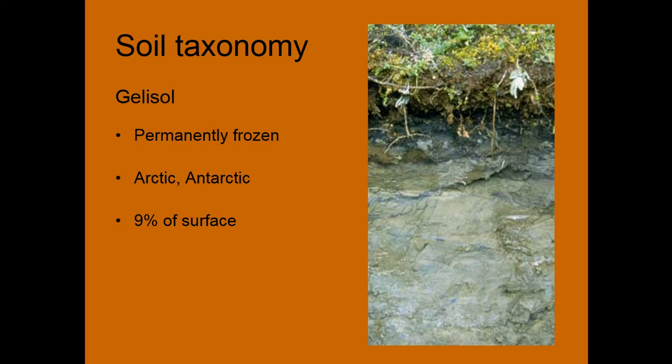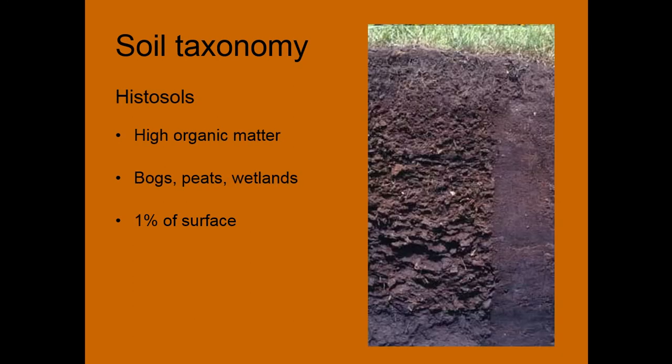A Gelisol is permanently frozen. These are found in the Arctic and Antarctic, about 9% of the surface of the planet. Our Histosols are high in organic matter — these are like bogs, peats, wetlands — so really coarse organic matter that hasn't been broken down because they're often saturated. Only about 1% of the soil surface, but very important ecologically.